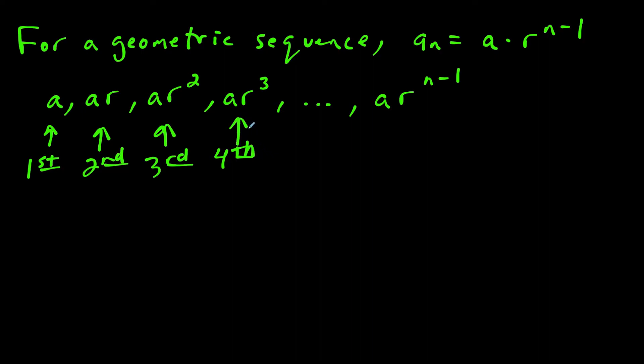Our second term would be a times r, and our third term would be ar squared, and our fourth term would be ar to the third. And the trend to notice is that whatever term you're up to, the power of r is one less. So by the time we get to the n-th term, the power of r would be n minus 1.